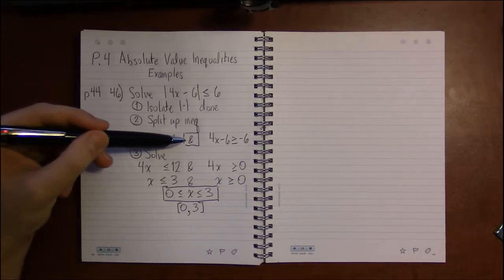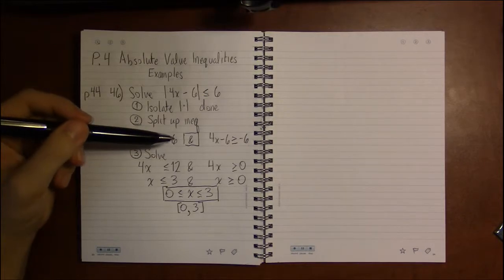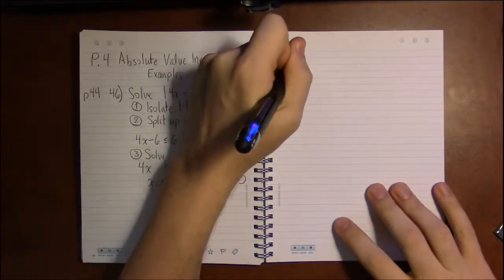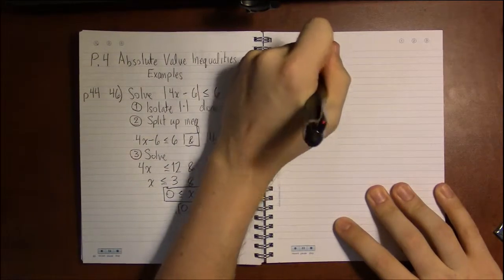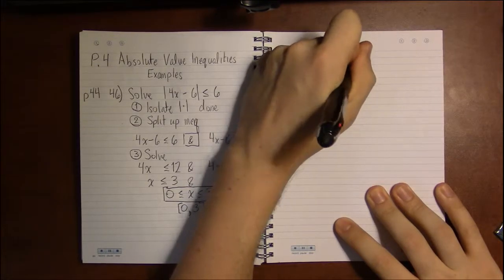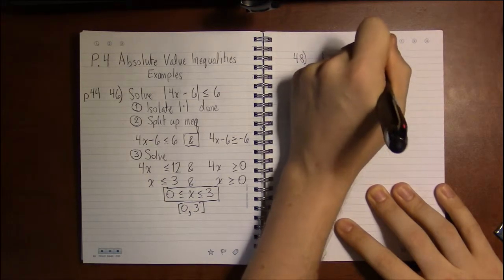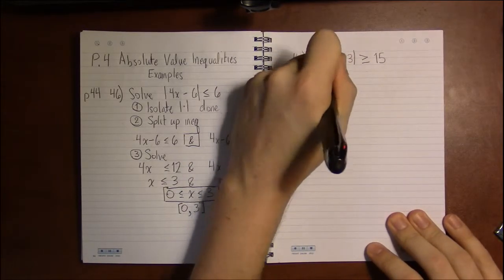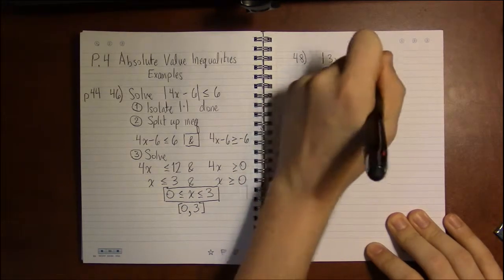Alright. Now we've done two ANDs, one in this video and one from the previous video. So we need to do a couple ORs. Let's look at 48. This looks like a good one. We're solving absolute value of 3x minus 3 being greater than or equal to 15. Once again, step one is already done for us—we're just isolating the absolute value.